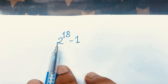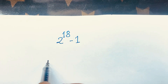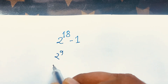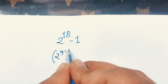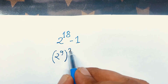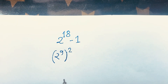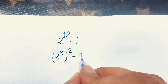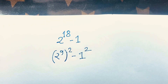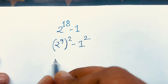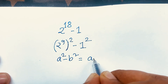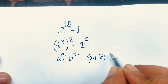First, I can see here we have 2 to the power 18. I can rewrite 2 to the power 18 as 2 to the power 9, in brackets, squared — because 2 times 9 equals 18, according to exponential rules. Then minus 1, and 1 squared is 1.